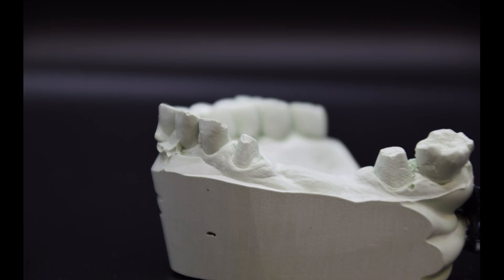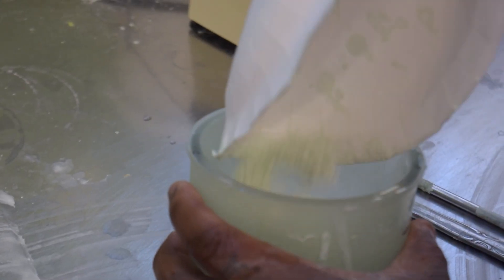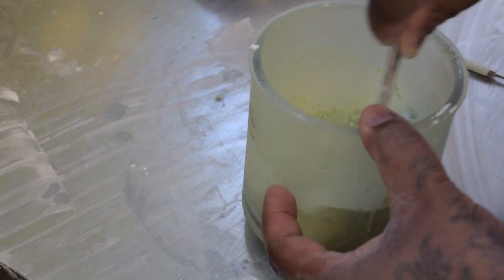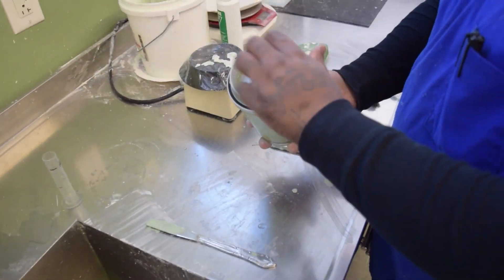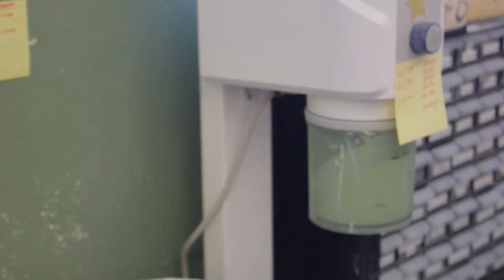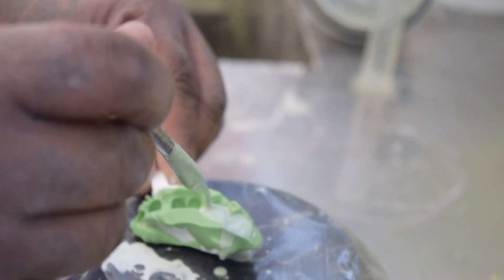The initial step in any dental restoration, stone models must first be made to replicate the patient's mouth. The stone powder is mixed with water to create a slurry and a lab technician carefully fills the impression.